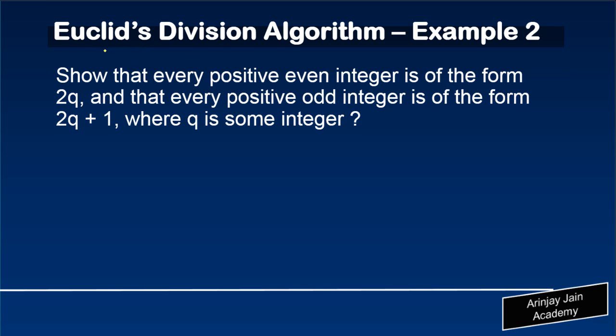Let's take an example on Euclid's division algorithm. Show that every positive even—even means what? 2, 4, 6, 8—integer